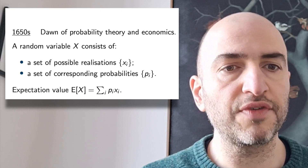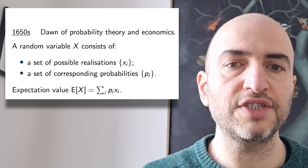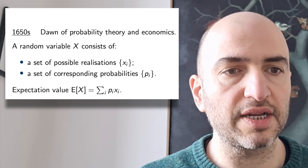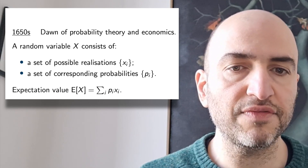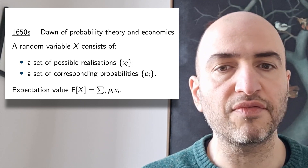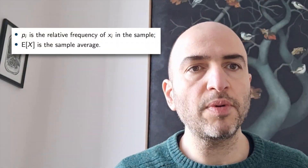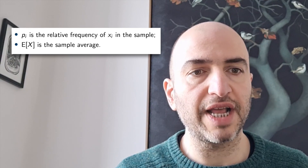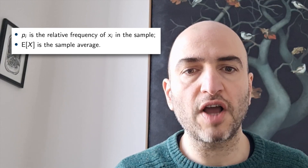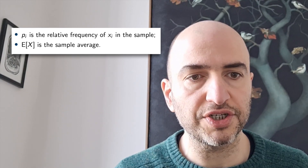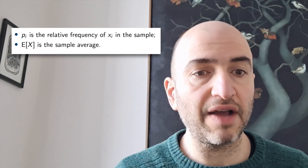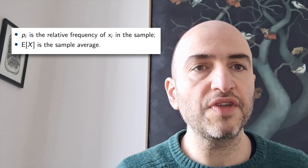The random variable was the first model of an uncertain numerical outcome. It consists very simply of a set of possible realizations and a set of corresponding probabilities. The expectation value of a random variable is defined as the probability-weighted average of the realizations. Now, these are just mathematical objects, and we haven't said anything yet about what they mean. The most common interpretation is the frequentist interpretation. We imagine a large sample of independent realizations of the random variable. The probability Pi is the relative frequency of realization Xi in the sample — in other words, the number of times we see Xi divided by the total number of observations. And the expectation value is simply the average of the realizations in the sample, in the limit of diverging sample size.